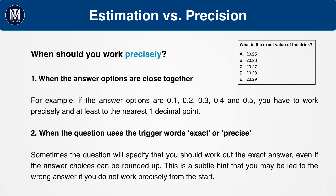In contrast, if the answer options are close together, or if the question uses triggers such as 'exact' or 'precise,' work precisely. For example, in this question the answer options are separated by just one pence, so you need to work very precisely.